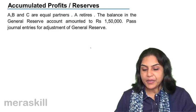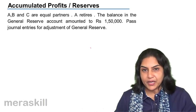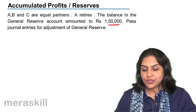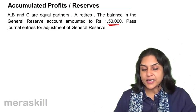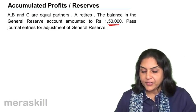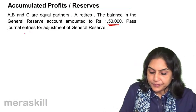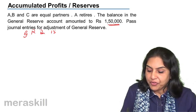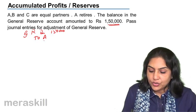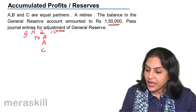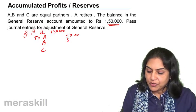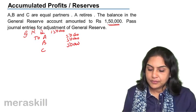Let us take an example. A, B and C are equal partners and A retires. Balance in the general reserve account amounts to $1,50,000. The entry we would pass is: general reserve account debit $1,50,000, to A $50,000, to B $50,000 and to C $50,000 — in their old profit sharing ratio.